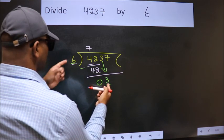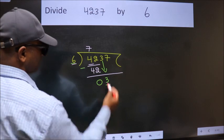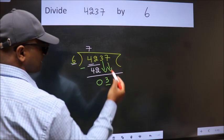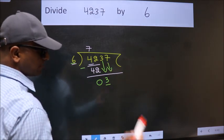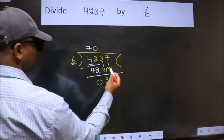3 is smaller than 6. So, we should bring down the second number. And the rule to bring down the second number is, put 0 here. Then only we can bring down this number.